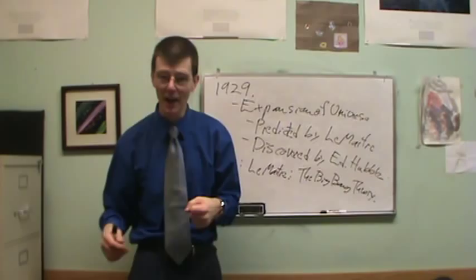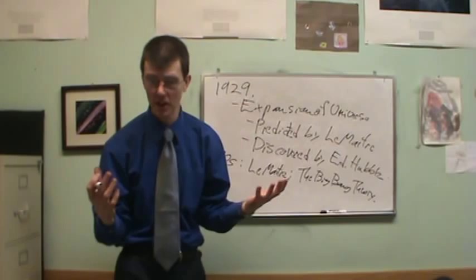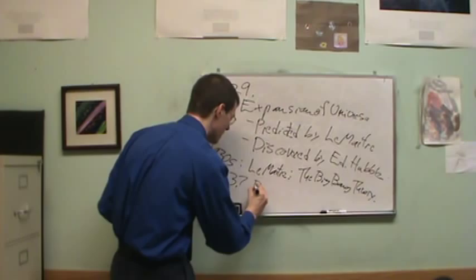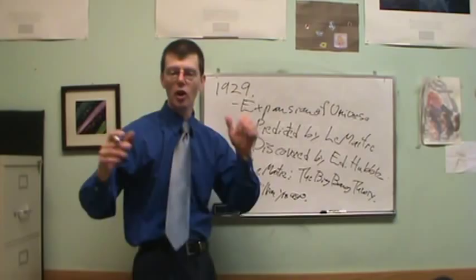Based on modern measurements, better than the stuff Lemaitre had available, we can calculate that all the galaxies in the universe must have had zero distance away from each other at a point 13.7 billion years ago, that all the galaxies in the entire universe are together in one place at one time.